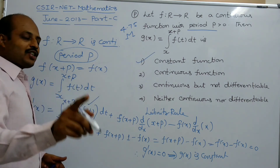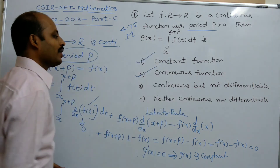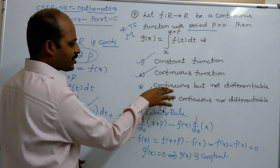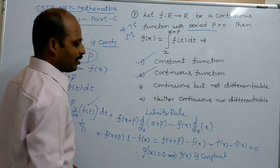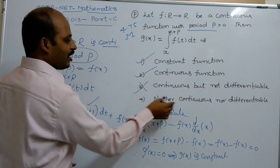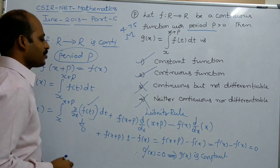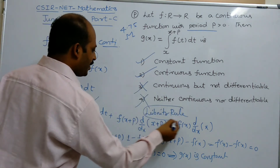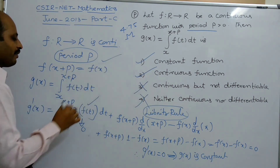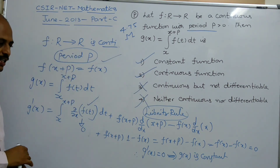Since g is a constant function, option 1 is correct. We also know that every constant function is continuous, so option 2 is also correct. Option 3 — continuous but not differentiable — is wrong, because every constant function is differentiable. Option 4 — neither continuous nor differentiable — is also wrong. Remember the Leibniz rule for differentiation under the integral sign and the definition of a periodic function, and this problem becomes very easy to solve.